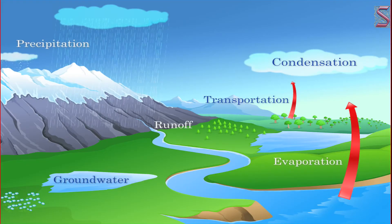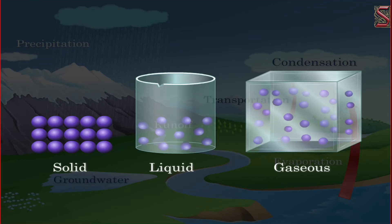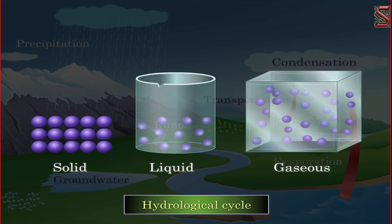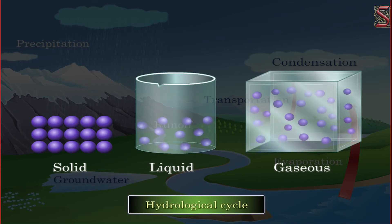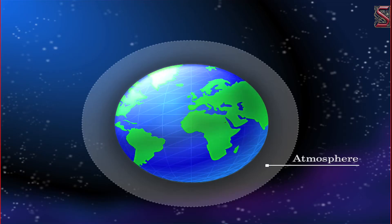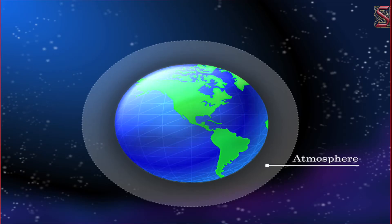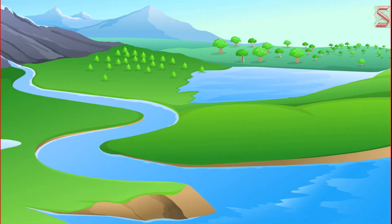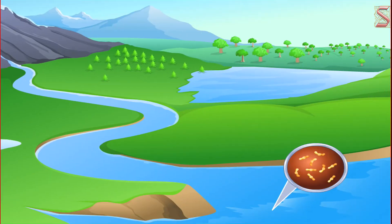The circulation of water in various forms — like solid, liquid, and gaseous — is called the hydrological cycle. In addition, the constant exchange of water between various features like atmosphere, land, oceans, subsurface, and organisms is also a part of the hydrological cycle.